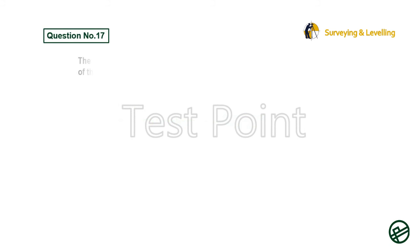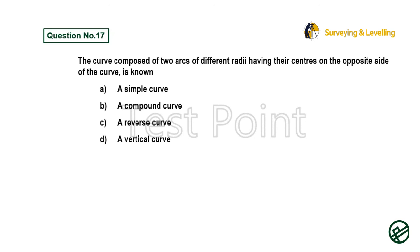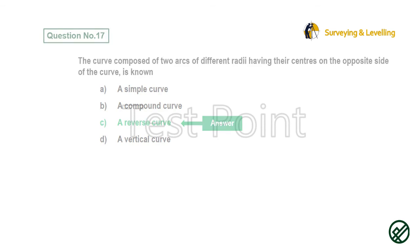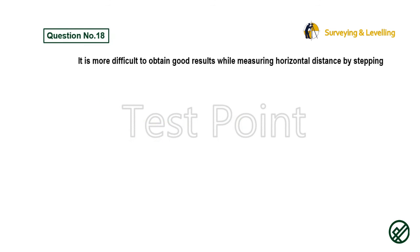Question 17: The curve composed of two arcs of different radii having their centers on the opposite sides of the curve is known as — Option A: A simple curve. Option B: A compound curve. Option C: A reverse curve. Option D: A vertical curve. Answer is Option C: A reverse curve.